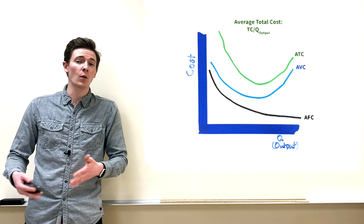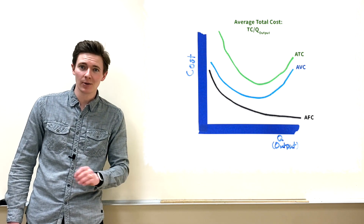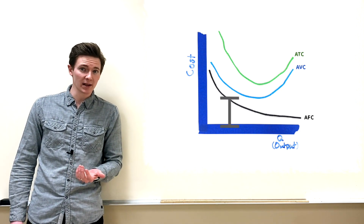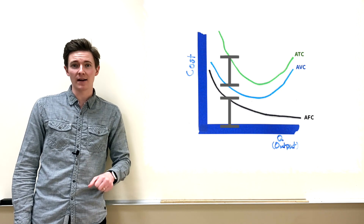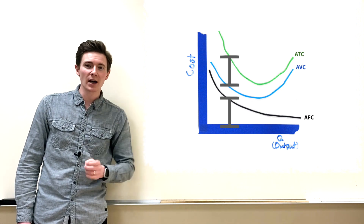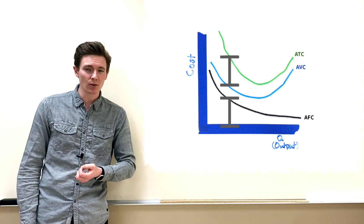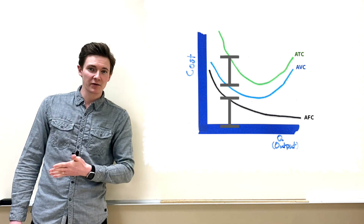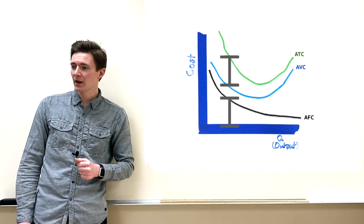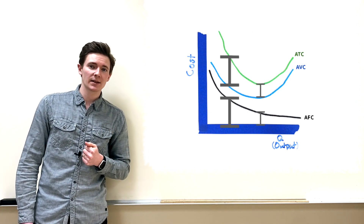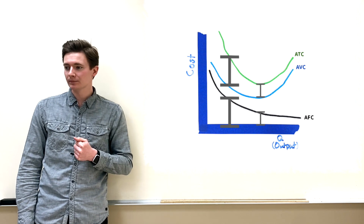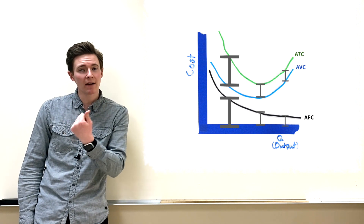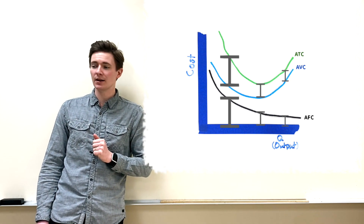Note that all these curves are divided by quantity of output. The distance between ATC and AVC should equal AFC above zero — so when plotting, jot down a few points first to make sure ATC is drawn correctly above AVC. Also, ATC approaches AVC just as AFC approaches zero.